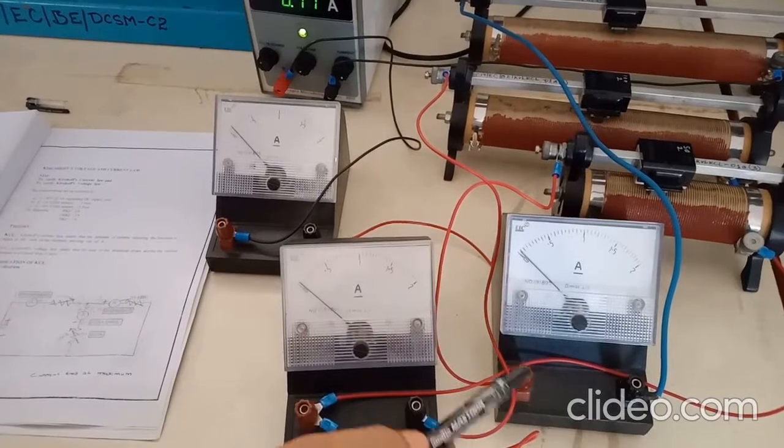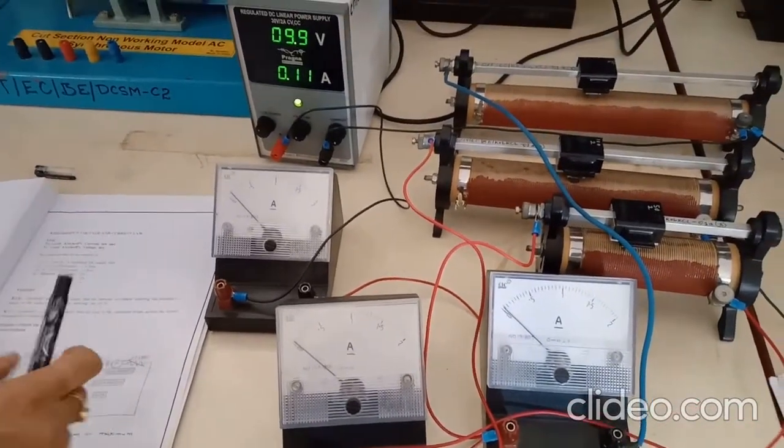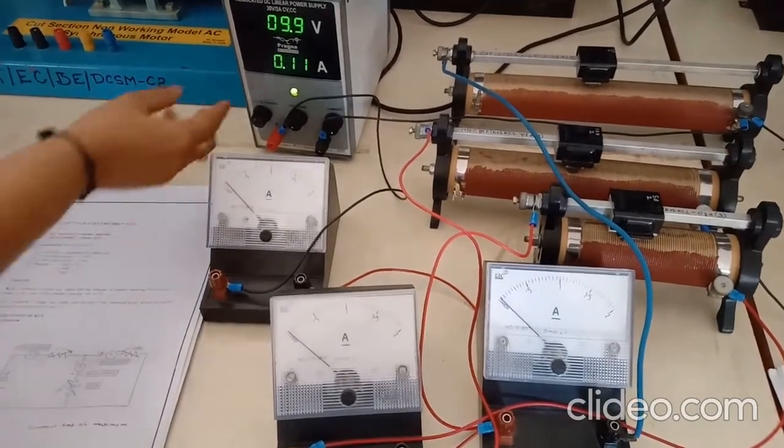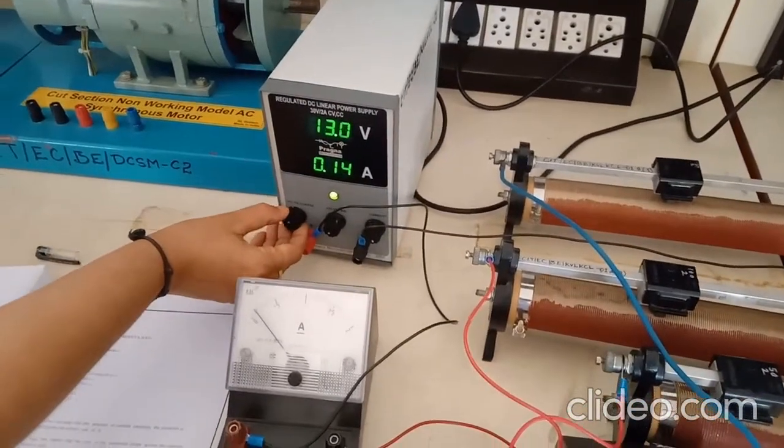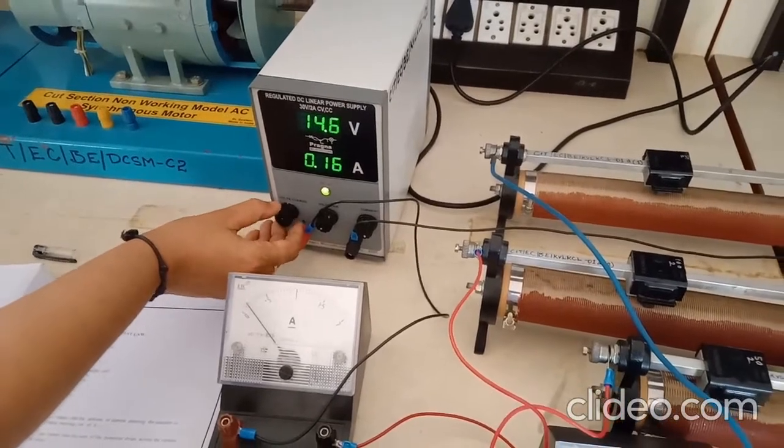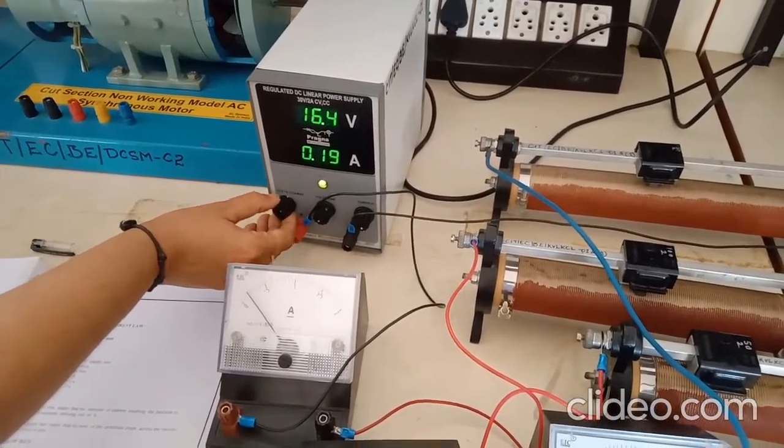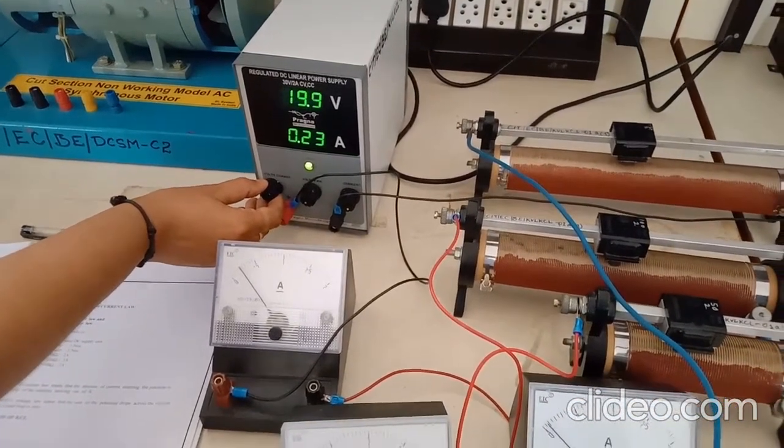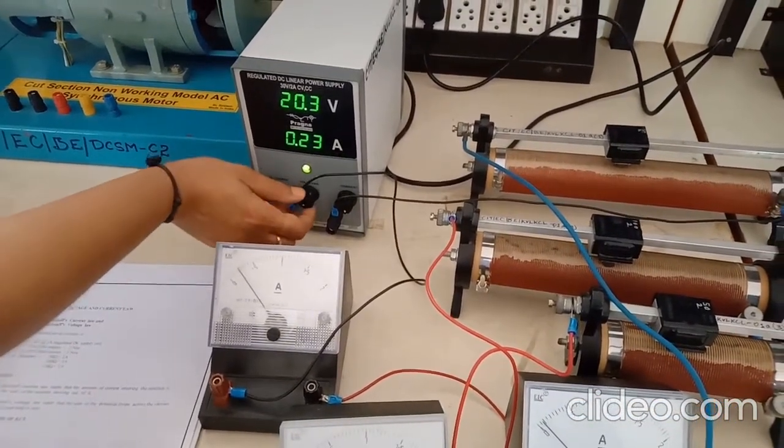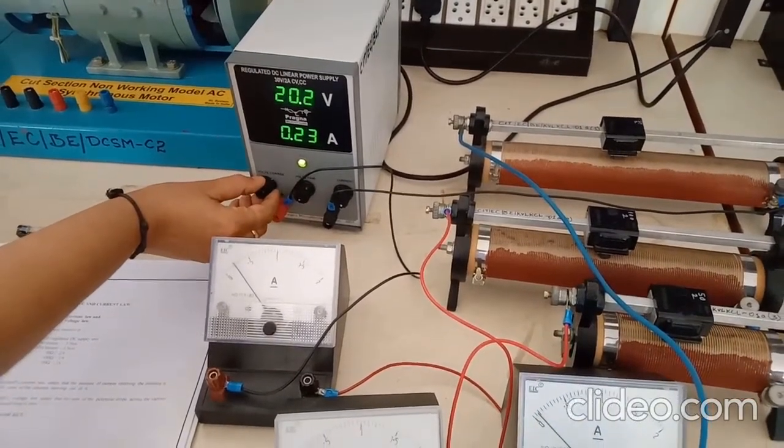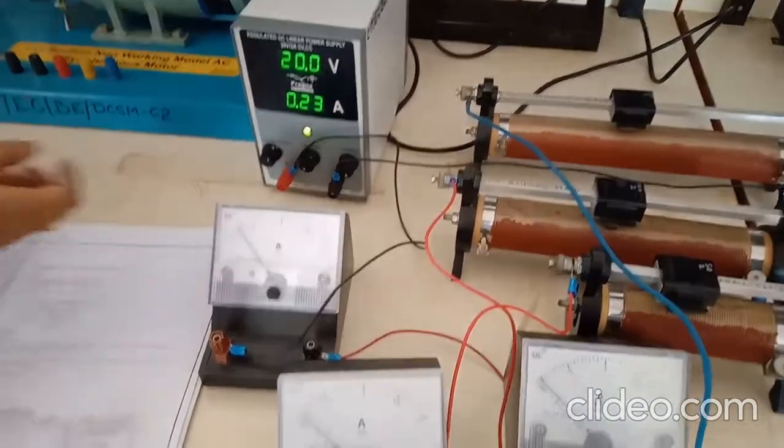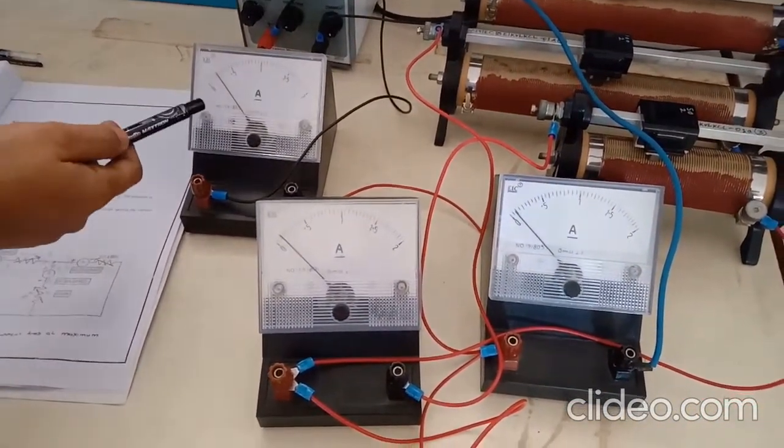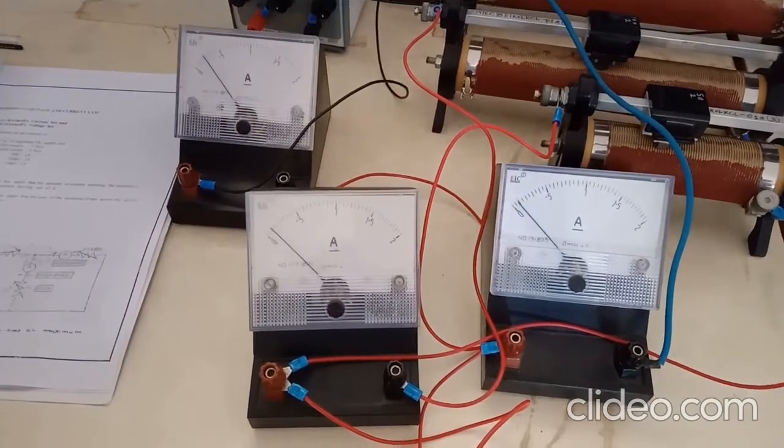Next, I am going to set this for 20 volts. Similarly, you should take readings at 10, 15, 20, 25, and 30 volts. Now you can note down the reading in the ammeter. The voltage is 20.